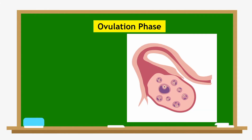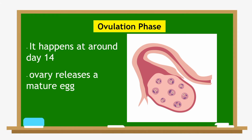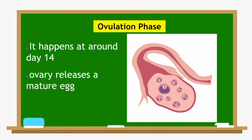Next we have the ovulation phase. It happens around day 14, when the ovary releases a mature egg. The egg travels down the fallopian tube toward the uterus to be fertilized by sperm.